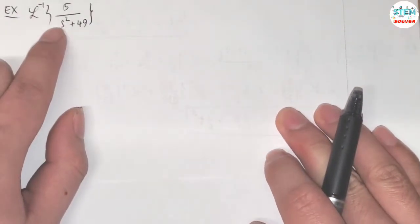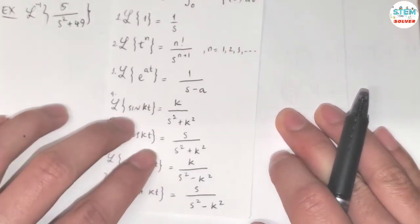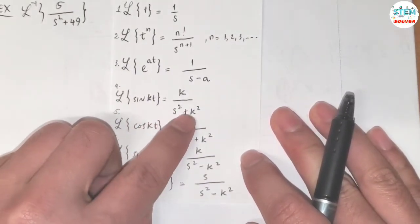Find the inverse transform of 5 over x square plus 49. By looking at the table, we see that we have x square plus 49.